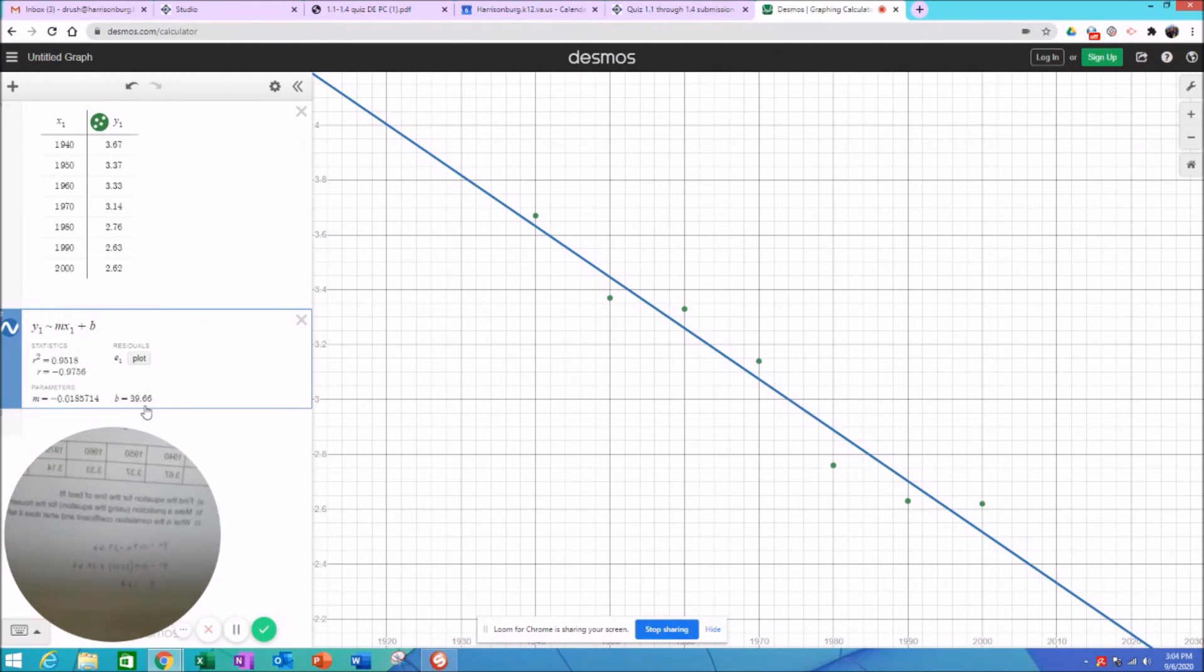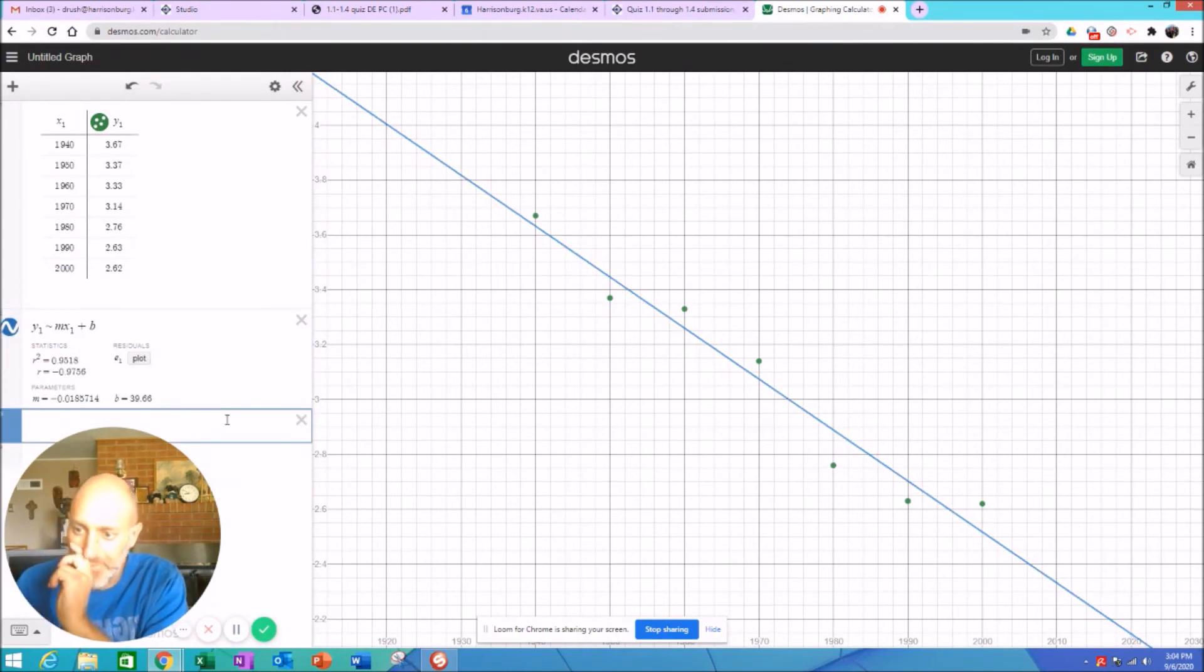And then for part b, if we want to make a prediction for the year 2020, I'm going to take that equation and I'm going to plug it in. So if you round that slope a little differently, you might get a little different answer. But basically, if you use what I had, I have negative 0.019 times 2020 plus 39.66 and it gives you 1.28. So your part b could look a little different depending on how you round your slope. But there, that's one of your potential answers.